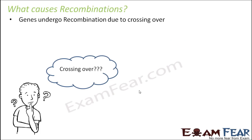So now the next question that comes to your mind is what causes recombinations? In recombination, crossing over plays a very important role. While we were going through meiosis, we used the term crossing over, which happens during prophase 1. Two homologous chromosomes pair up and exchange some of their parts with each other, and because of that, new combinations or recombinations are formed.